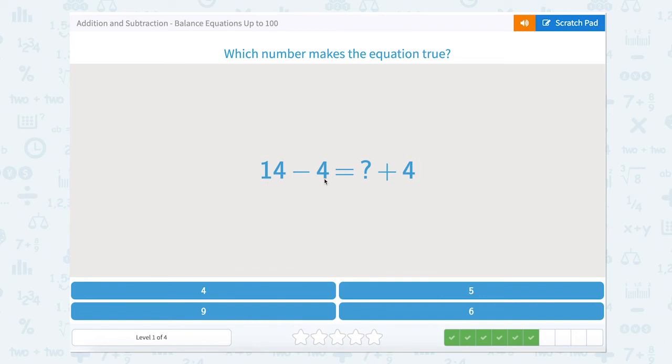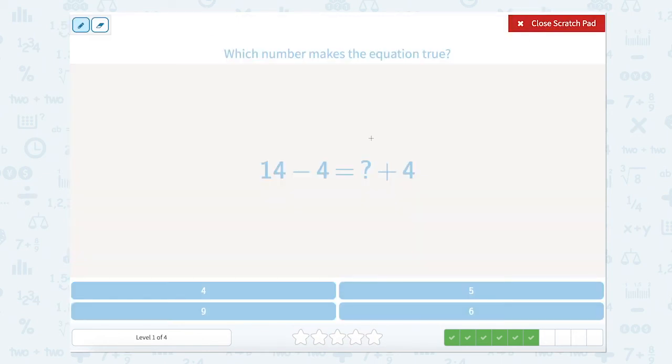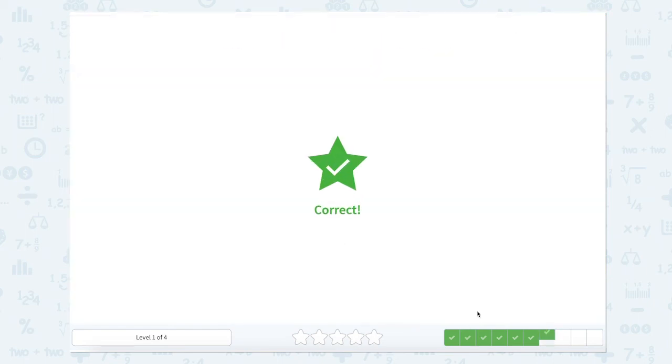Now 14 minus 4 equals something plus 4. So let's use our scratch pad. We see our two sides of the equal sign here. Let's solve for the side that has two numbers. So 14 minus 4 equals 10. So 10 equals something plus 4. Well, we can count up from 4 if we're not sure. But 4 plus 6 equals 10. So let's close that scratch pad and click 6.